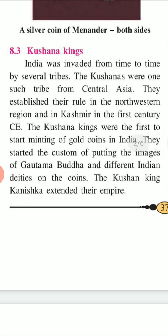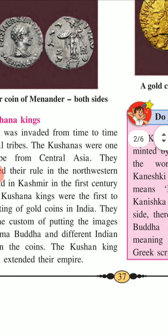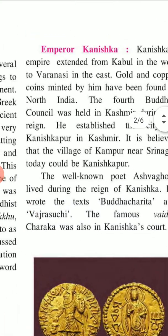The Kushana Kings: India was invaded from time to time by several tribes. The Kushanas were once a tribe from Central Asia. They established rule in the northwestern region and in Kashmir in the first century CE. The Kushana kings were the first to start minting gold coins in India. They started the custom of putting the images of Gautam Buddha and different Indian dignitaries on the coins.